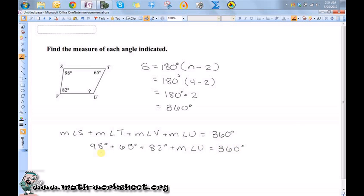So if I add all those up, I should get 245 degrees, plus the measure of angle u, equals 360 degrees. Then if I subtract 245 from both sides, I get that the measure of angle u must equal 115 degrees.